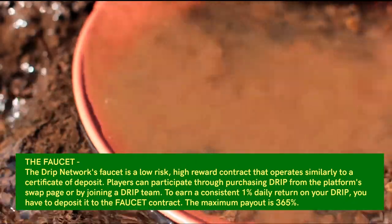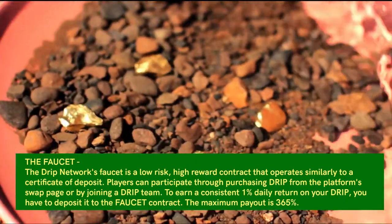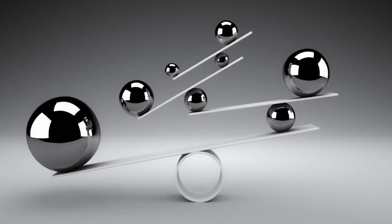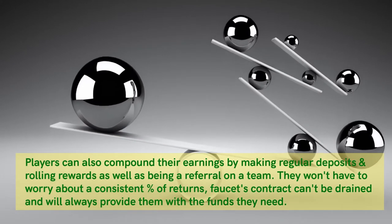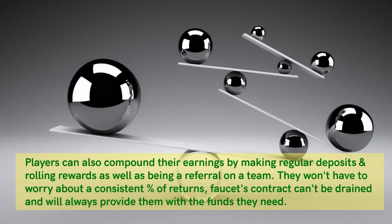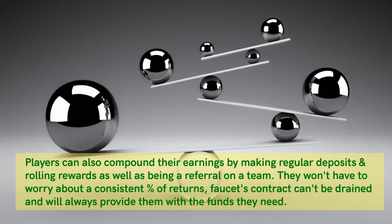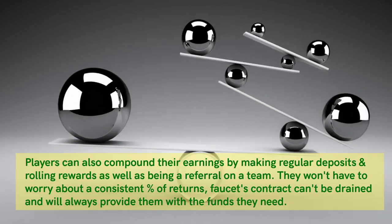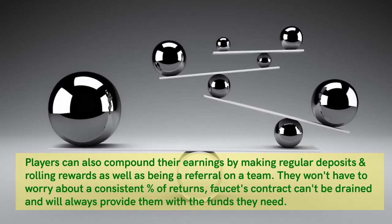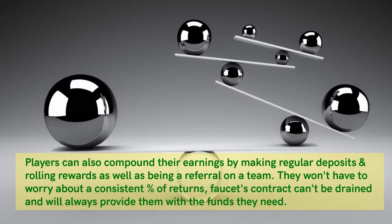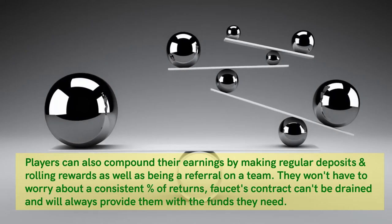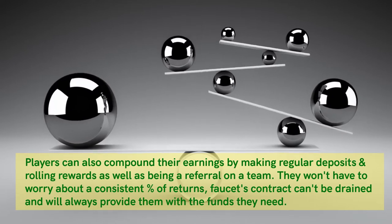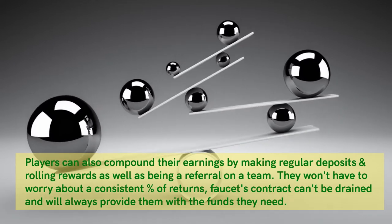The maximum payout is 365%. Players can also compound their earnings by making regular deposits and rolling rewards, as well as being a referral on a team. They won't have to worry about a consistent percent of returns, as the faucet contract can't be drained and will always provide them with the funds they need.